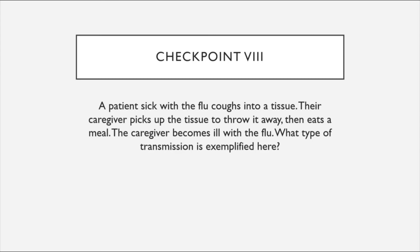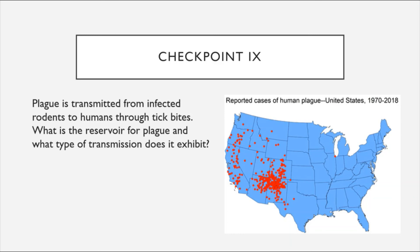Final checkpoints: A patient sick with the flu coughs into a tissue; their caregiver picks up the tissue to throw it away and then eats a meal, subsequently becoming ill with the flu. What type of transmission is exemplified here? And lastly: plague is transmitted from infected rodents to humans through tick bites. What is the reservoir for plague, and what type of transmission does it exhibit? Once you've finished this checkpoint, you're finished with Chapters 15 and 16.